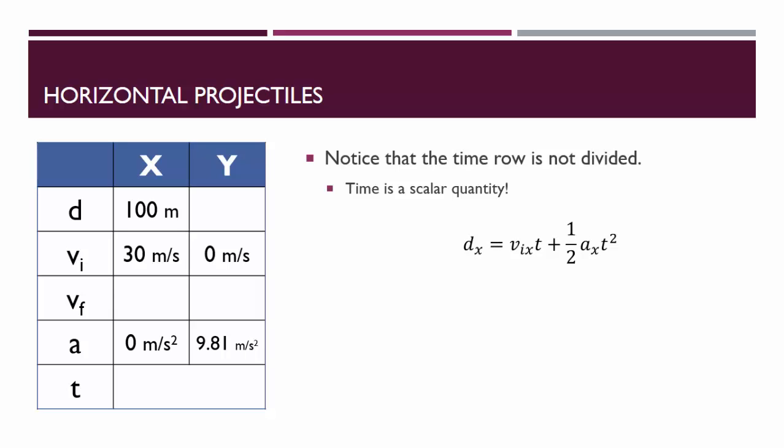We're going to be using our UAM equations here. So we have D, VI, A, and we're looking for T. So we're going to use the equation D equals VIT plus one half AT squared.